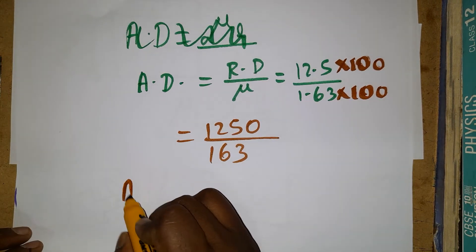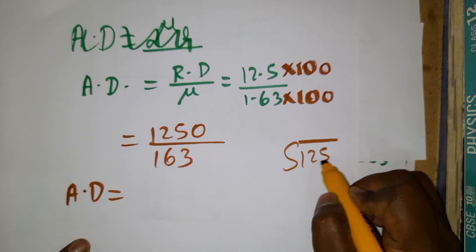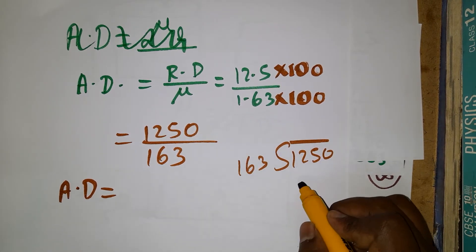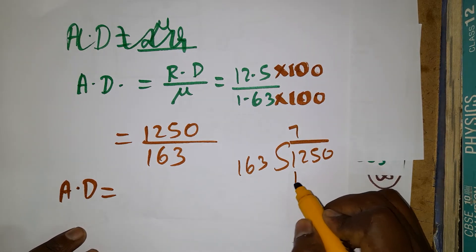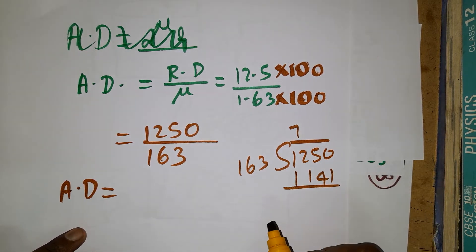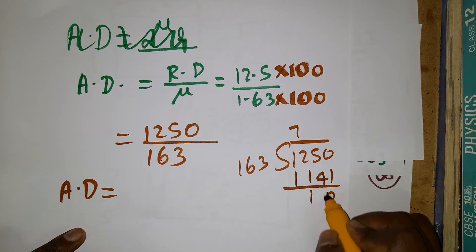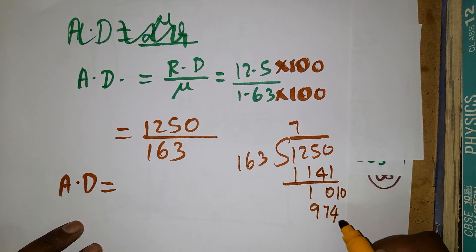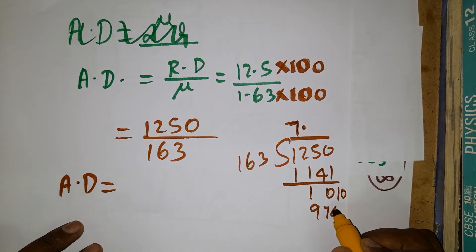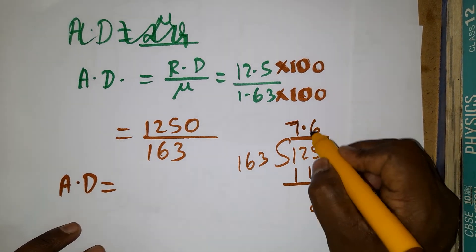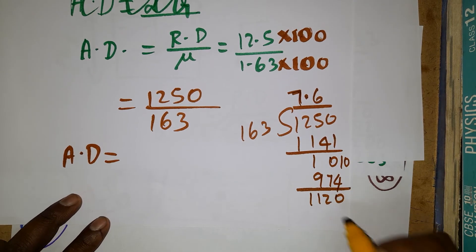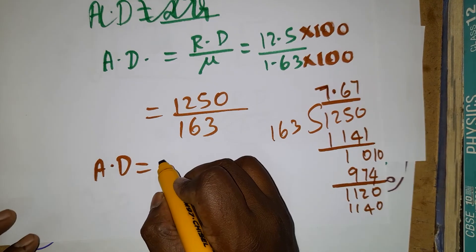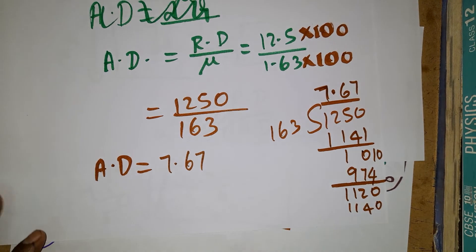Performing the division of 1250 by 163: 163 goes into 1250 seven times (7 × 163 = 1141), remainder 109. Bringing down a zero gives 1090, which goes approximately 6 times (6 × 163 = 978), remainder 112. Continuing gives approximately 7. So the apparent depth for Case 2 is 7.67 centimeters.